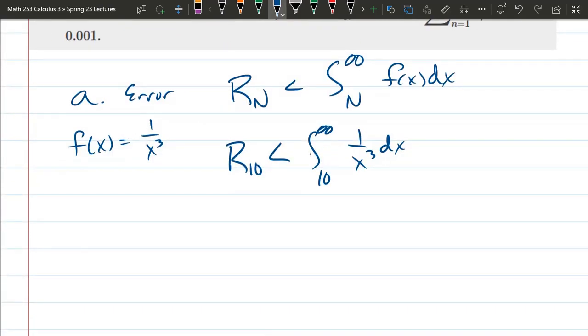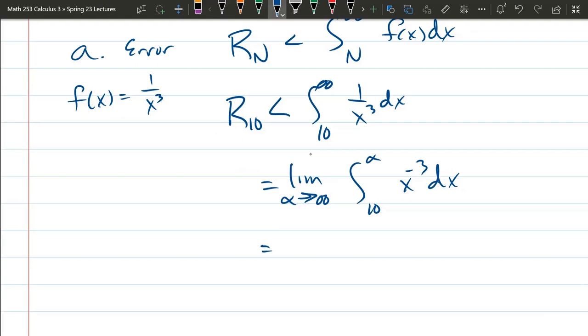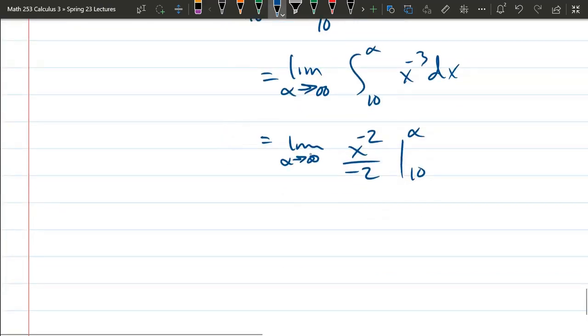I'm going to do this really quickly. This is an improper integral, needs to be turned into a limit. 10 to alpha, x to the negative 3 dx, add 1 to the exponent. When you take an anti-derivative, x to the negative 2, divided by that exponent, from 10 to alpha, limit as alpha approaches infinity.